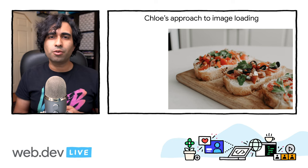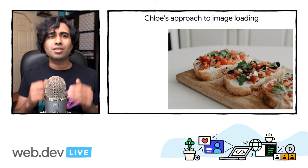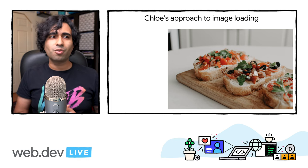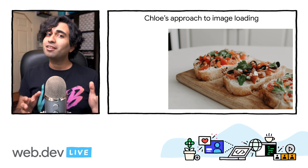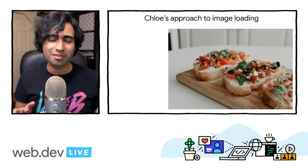Chloe's approach to image loading is that they use a skeleton pattern with a Sass CSS mixin called bruschetta loading.